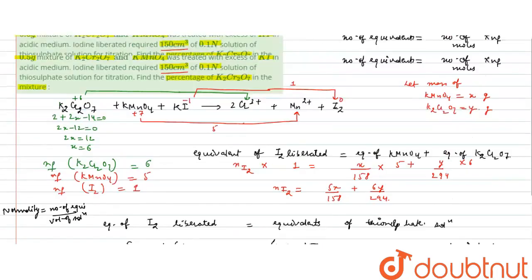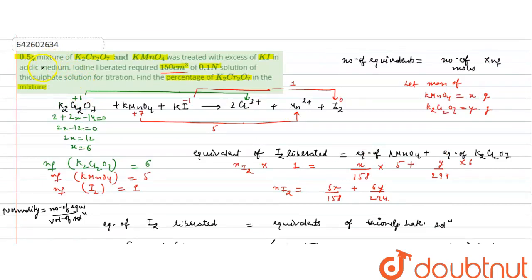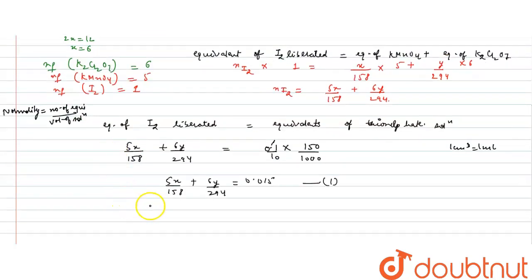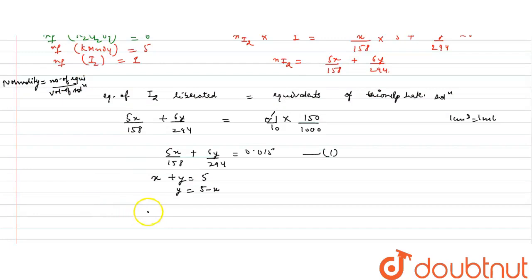The second equation comes from the total mixture being 0.5 gram, so x + y = 0.5. Substituting y = 0.5 − x into Equation 1 and solving, we get y = 0.073 grams.